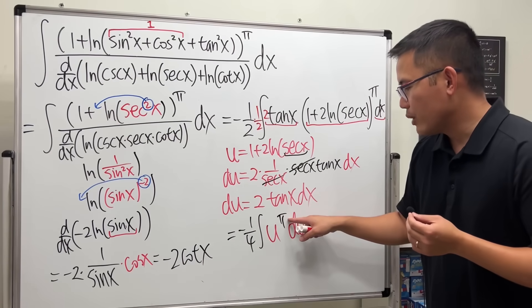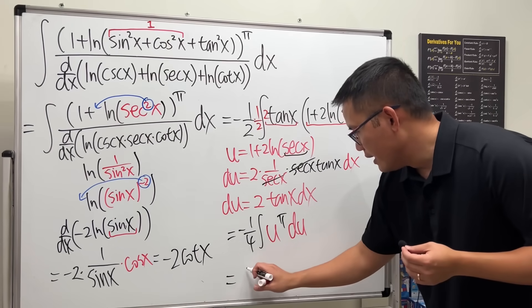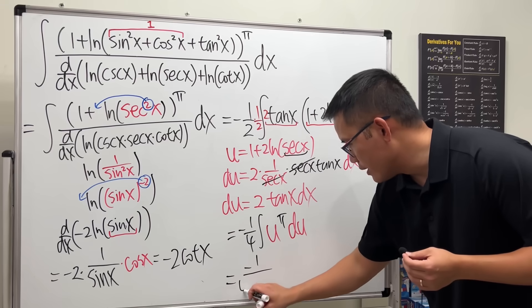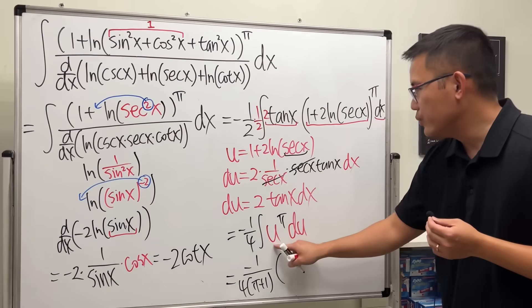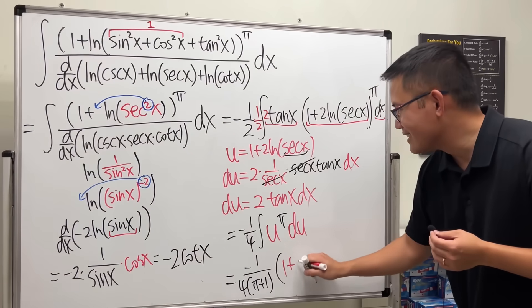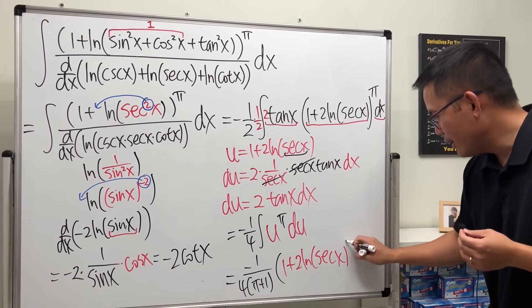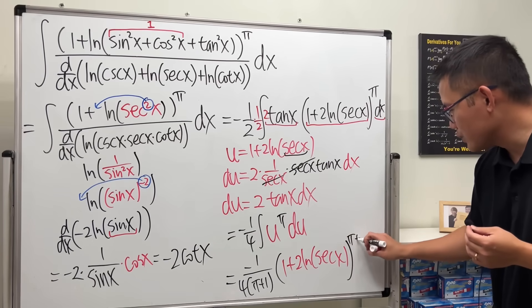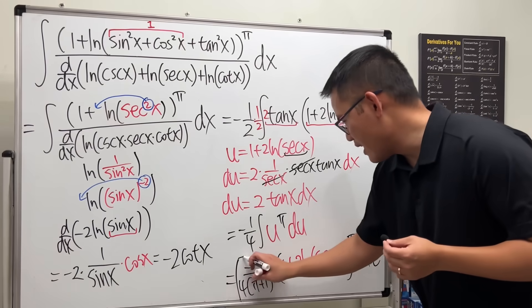So, go ahead and add 1 to it, and then divide it by that, right? So, we will have this: negative 1 over 4 times pi plus 1 times u, which is that, 1 plus 2 ln of secant x, like so, and then raised to the pi plus 1 power. And we're done, look, plus c, yay.